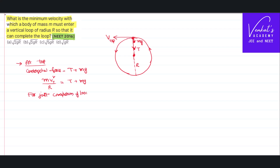For just completion of the loop, even if tension becomes zero, there is still weight acting towards the center to provide the necessary centripetal force. So for minimum centripetal force, tension can become zero. In that case, the minimum velocity at the top gives v_top² = rg, so the velocity at the top of the circle is √(rg).